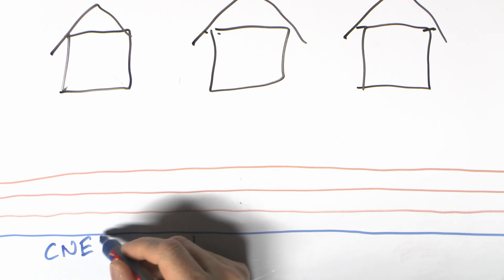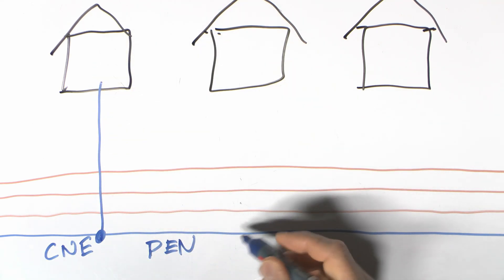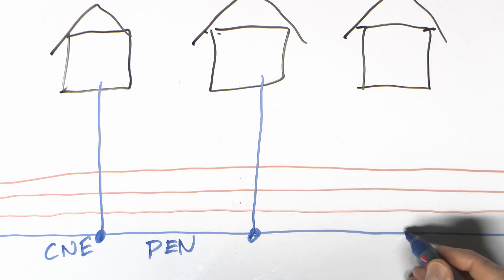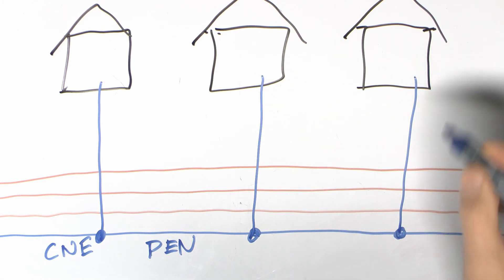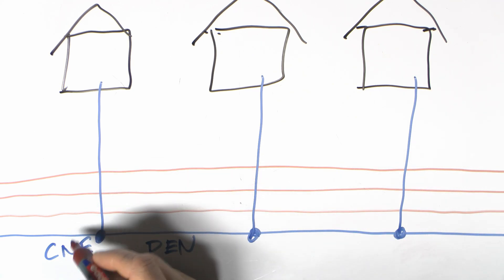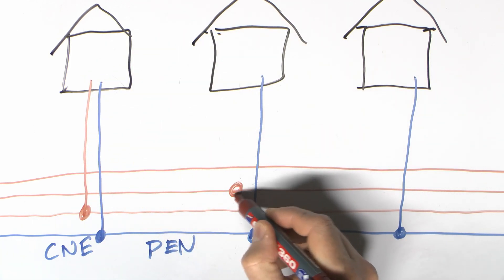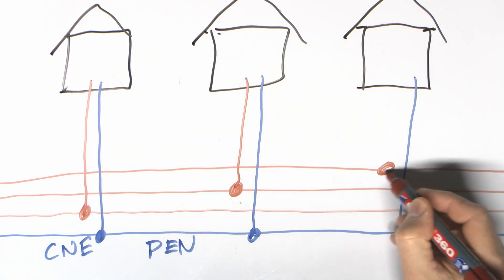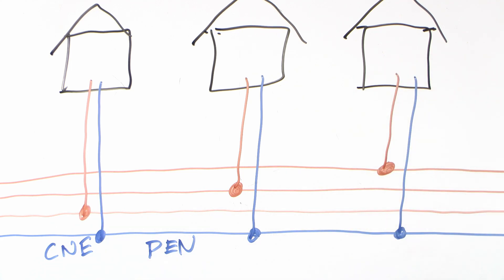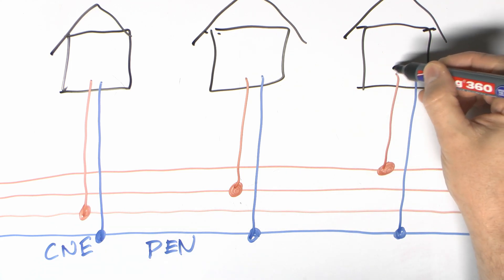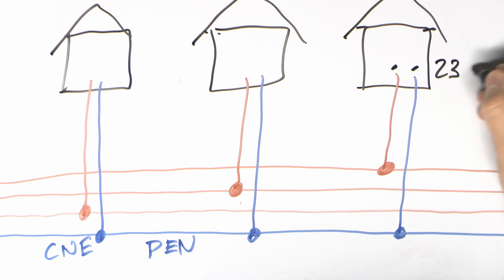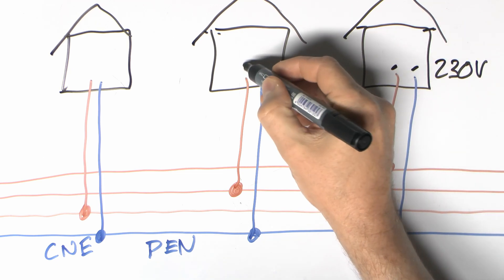The CNE conductor will be tapped off into all of the properties of course, so you're going to have one going over there, one here, and one there. And then the other conductor in the cable, there'll only be one. As I say, most properties in Britain only have a single-phase supply. Not unheard of to have a three-phase in a domestic property, but it's certainly an unusual situation. And you're going to have one of them coming off here. The next house may well have the other conductor there, and then the third one will have that one.